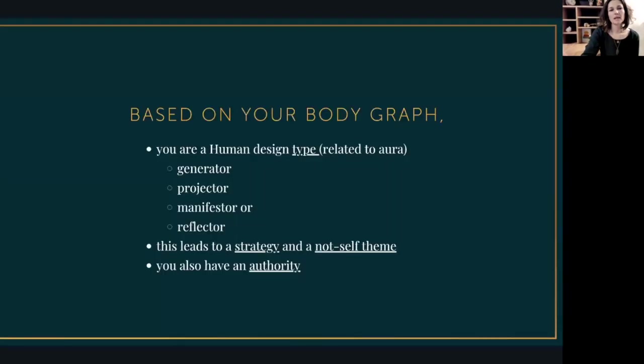And this in the middle is basically your physical and emotional system in human design terms. So based on your body graph, you are a human design type, and that is based on your energy field, your aura. You can be a generator. There's a subcategory there, and it's called the manifesting generator. You can be a projector. You can be a manifester, or you can be a reflector. So it's actually five of them.